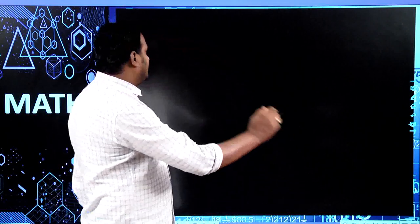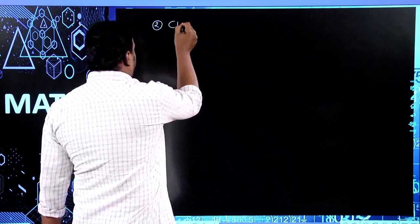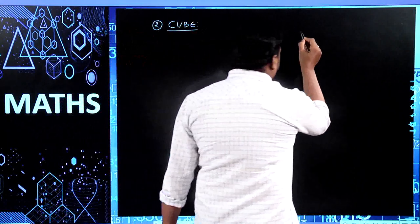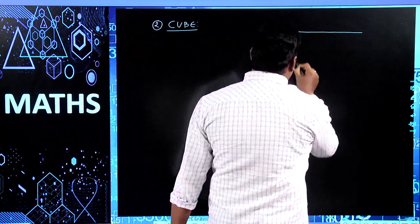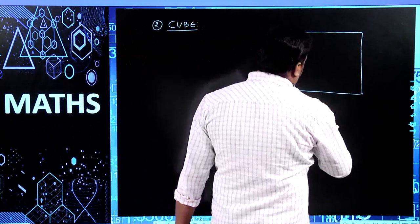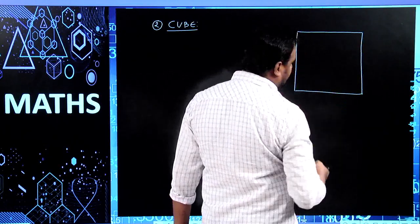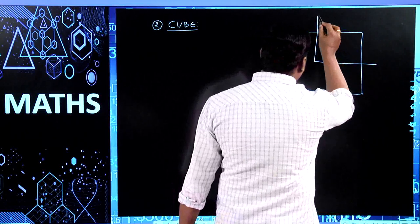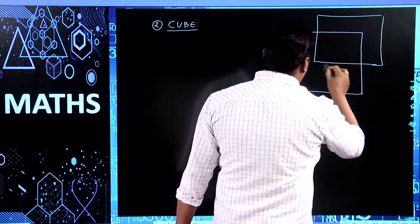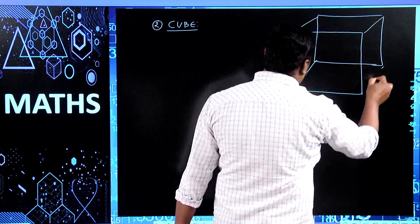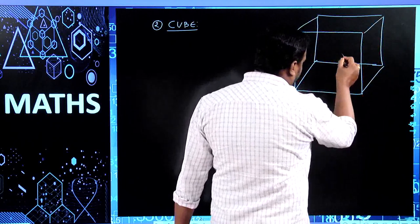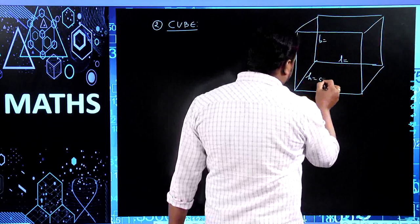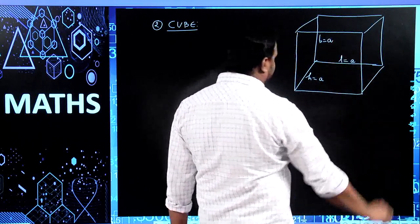Now we are going to discuss about a cube. What do you mean by a cube? Coming to the cube, let us have a solid object where the face — otherwise the base — is a square, and all the lateral surfaces are also squares. This means length is equal to breadth is equal to height — all the same unit, let it be small a.